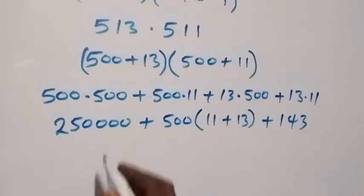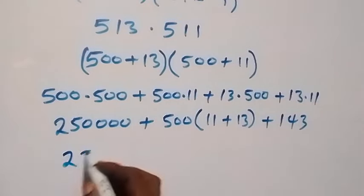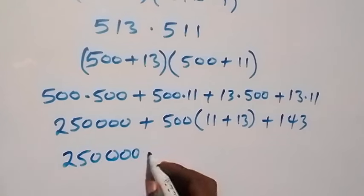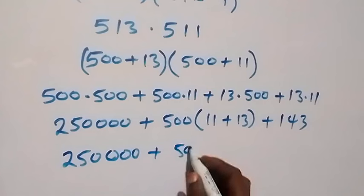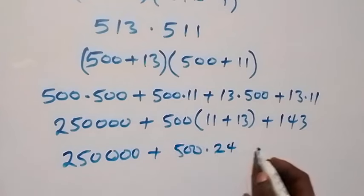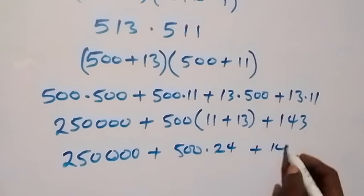At this here, we still have 250,000. Then, plus here we can now have 500 times 24. We give us 24, that's 12,000. Then, plus 143.